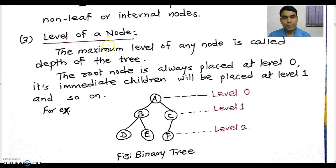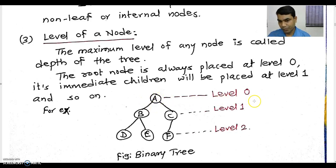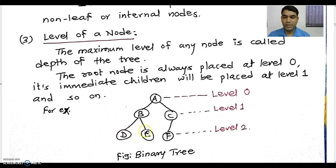The next term in binary trees is level of a node. In binary trees, the root node is always placed at level 0. The next immediate children will be placed at level 1, and next immediate children will be placed at level 2, and so on.